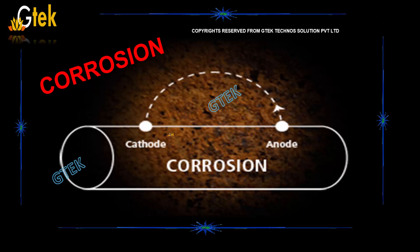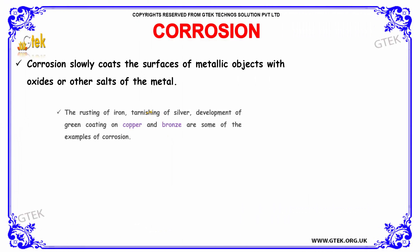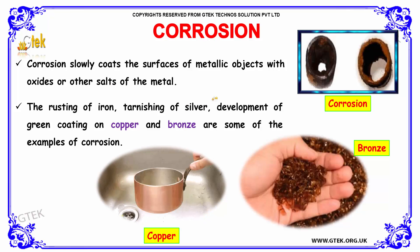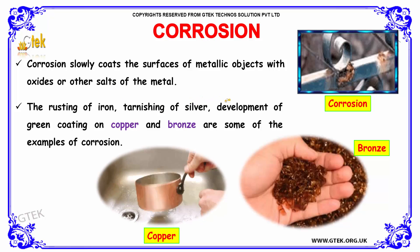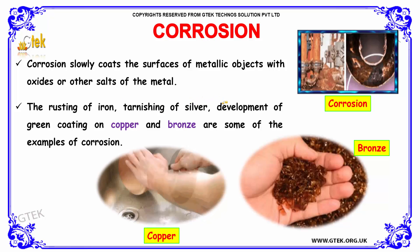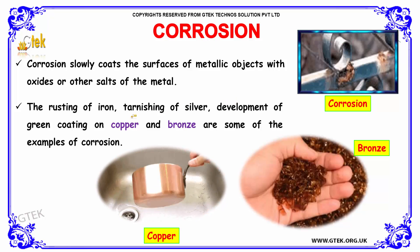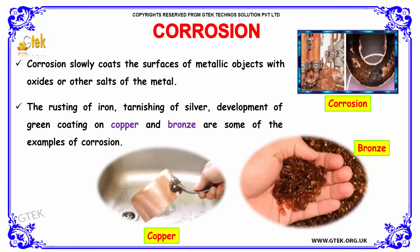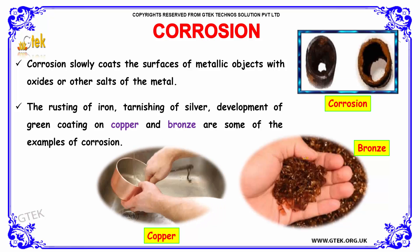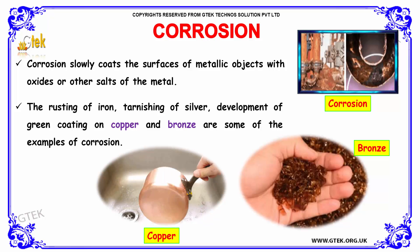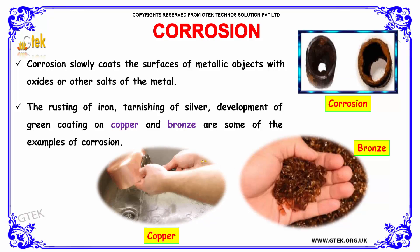Let us discuss about corrosion. Corrosion slowly coats the surface of metallic objects with oxides or other salts of the metal. The rusting of iron, tarnishing of silver, and development of a green coating on copper and bronze are some examples of corrosion.